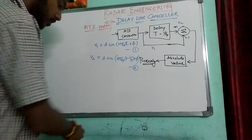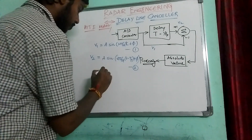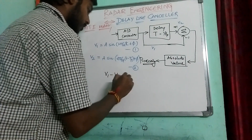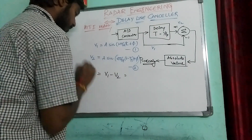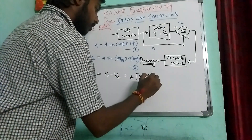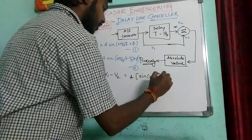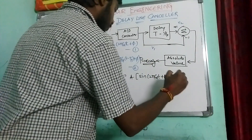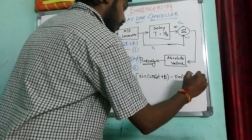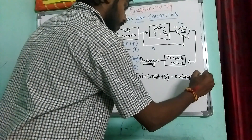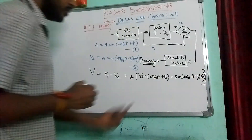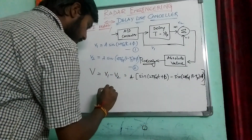Upon subtracting these two — performing subtraction V1 minus V2 — so it is: A sine(2 pi f_d t + phi) minus sine(2 pi f_d (t minus T_p) + phi). This is a sine C minus sine D form.